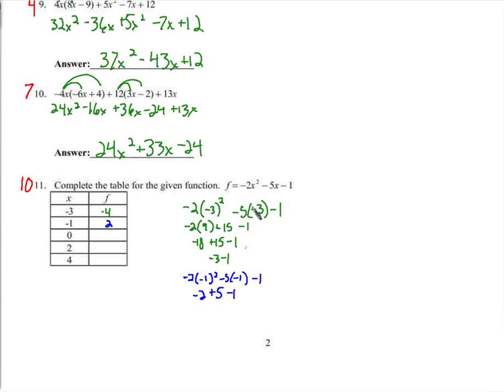For x equals 0: 0 is easy — 0 squared is 0, times negative 2 is 0. Minus 5 times 0 is 0. The only thing left is negative 1.